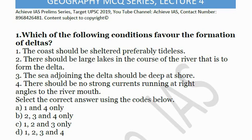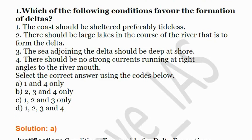Statement 3 is also incorrect because if the sea adjoining the delta is deep, the sediments will go deep into the water and be lost. If the seashore is shallow, sediments will be deposited and lead to delta formation. Statement 4 — there should be no strong currents running at right angles to the river mouth — is correct, because strong currents at right angles will wash away sediments and prevent delta formation. So the correct answer is A, that is 1 and 4 only.